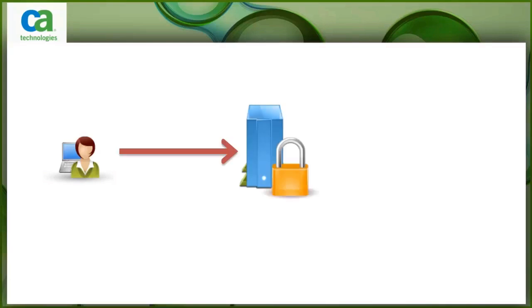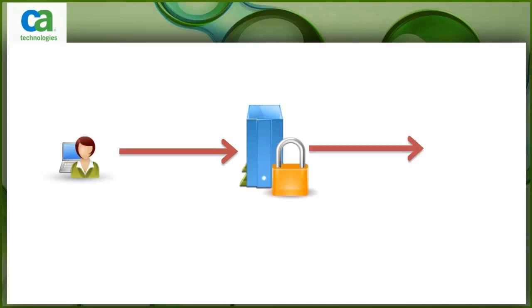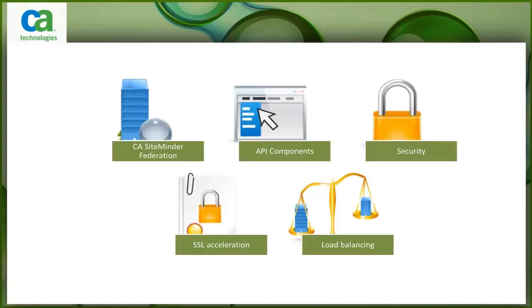So how does it work? Consider a user accessing the bank website. She wants to view her transaction details. The access request gets directed to the secure proxy server. It then requests the resource from the destination web servers and provides them to users. It acts like a reverse proxy and can be used to host CA SiteMinder Federation and REST API components. It also provides security, SSL acceleration, and load balancing.